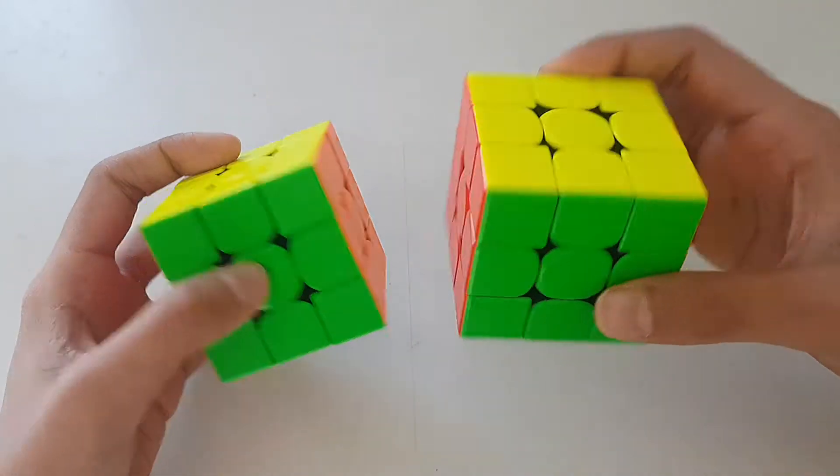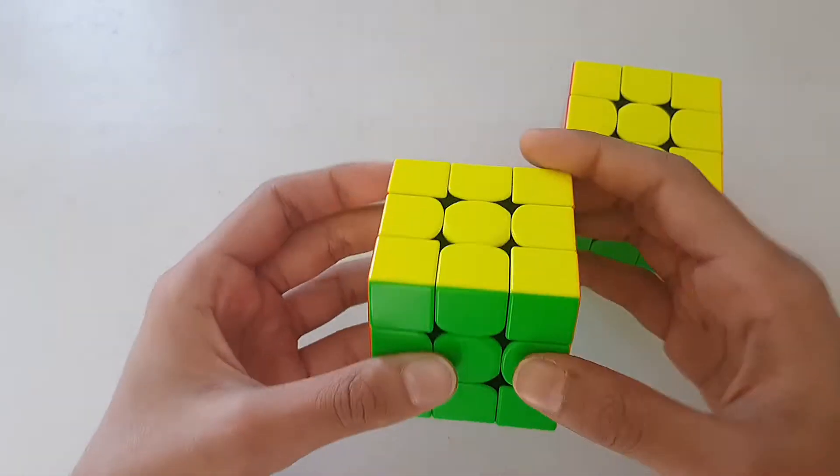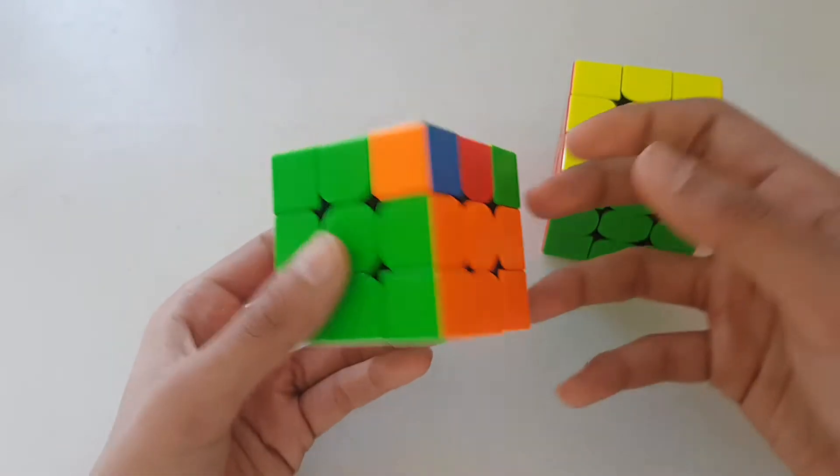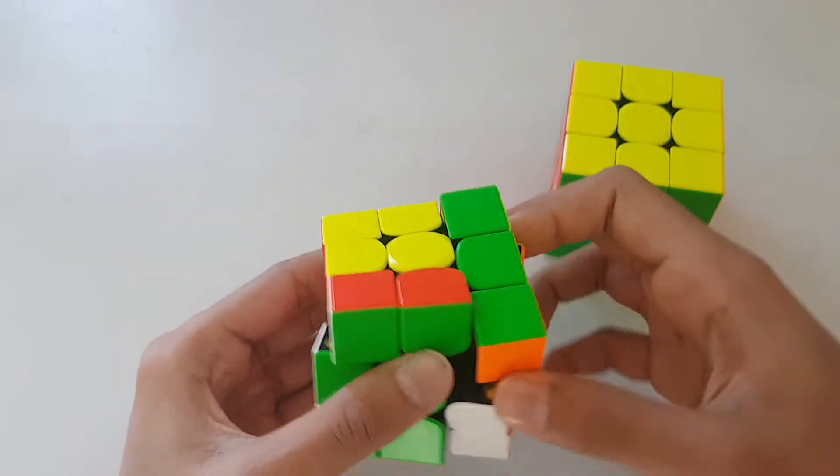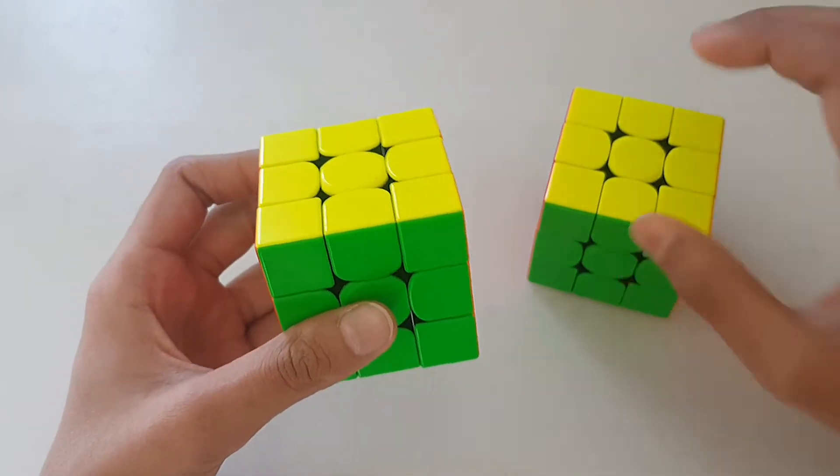So coming to the main point, does the size of the cube affect your solves? After talking about all these theories and stuff, the smaller cube takes less time to do one move while the bigger cube takes more time to do one move. I do think that smaller cubes are faster than the bigger cubes.